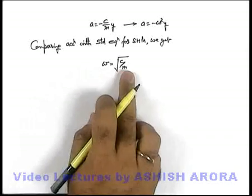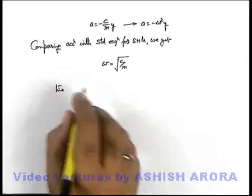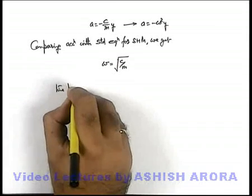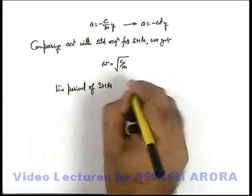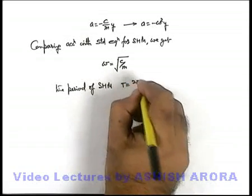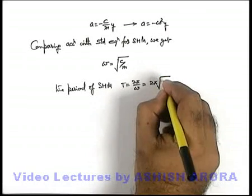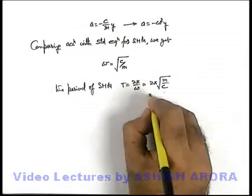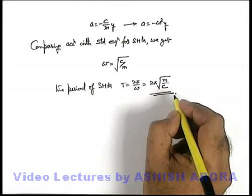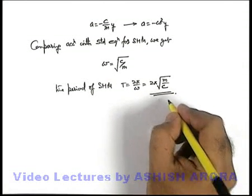Now if angular frequency is root c by m, we know that for SHM, time period can be written as T equals two pi by omega. On substituting the value of omega, we get time period as two pi times the square root of m by c. This will be the time period of the given physical situation under which a particle is executing SHM.